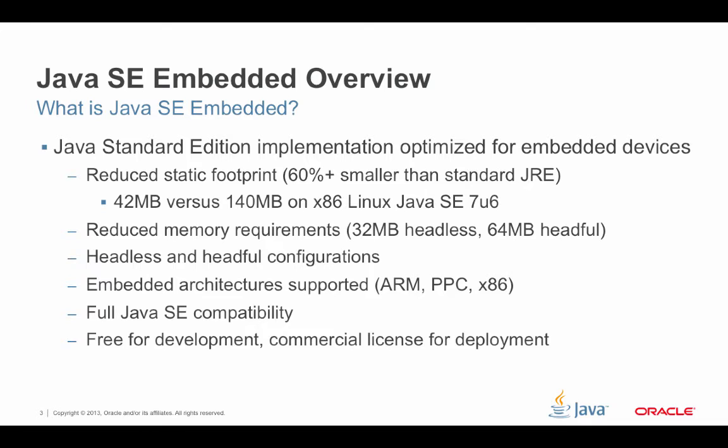Additionally, there are reduced memory requirements. For a headless system, we're talking about 32 megabytes, and in a headful environment, 64 megabytes are required to execute in this environment. You can configure this in either a headless or a headful configuration. The supported hardware architectures are the ARM processors, the PowerPC processors, and the x86. The key part is this is a fully Java SE compatible system. Finally, it's free for development, but a commercial license is required for deployment.